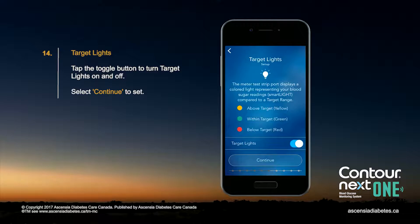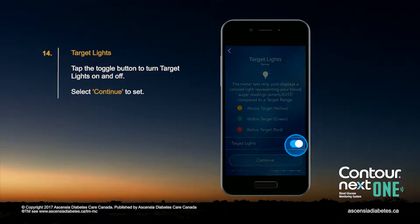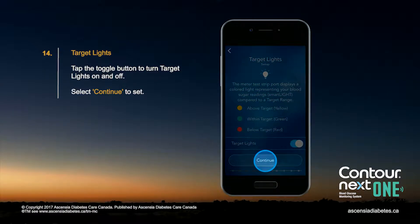Tap the toggle button to turn target lights on and off. Then select Continue to set.